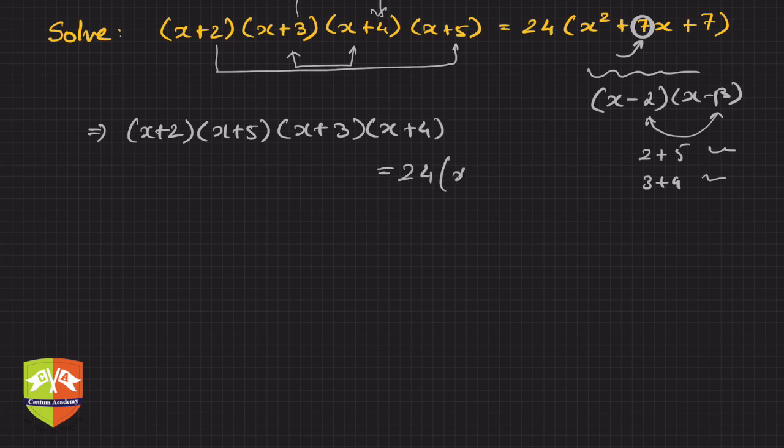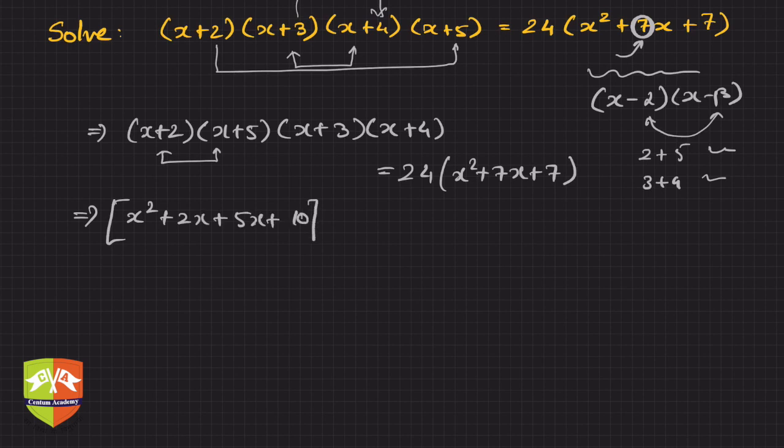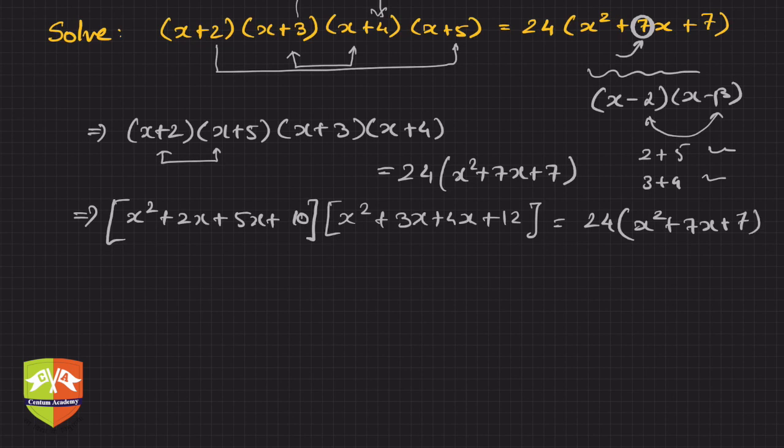Now if you see on the left hand side, if you just multiply these two, what will happen? It will be x²+2x+5x+10 first, and then in the second it will be x²+3x+4x+12, and this is equal to 24 times (x²+7x+7).